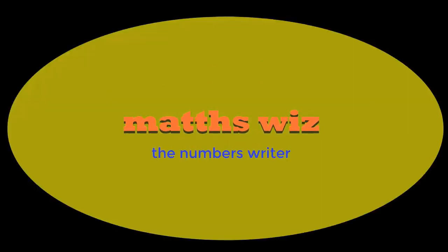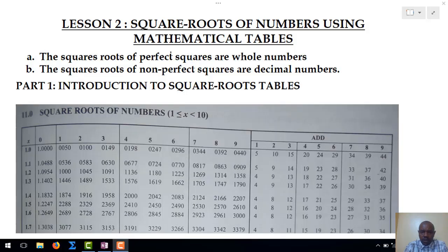Welcome to MathsWiz with Dixon. This is our second lesson in the series on how to use mathematical tables. In this lesson, we are going to look at using mathematical tables to determine square roots of numbers. We are going to be guided by two principles: number one, the square root of perfect numbers are whole numbers; and number two, the square roots of non-perfect numbers are decimals. In this lesson, we are going to look at square roots of non-perfect numbers.